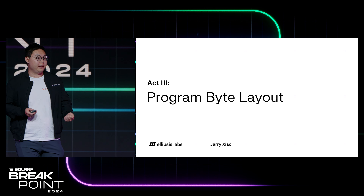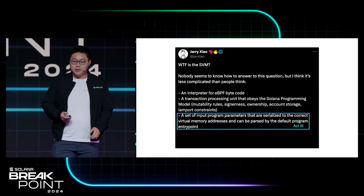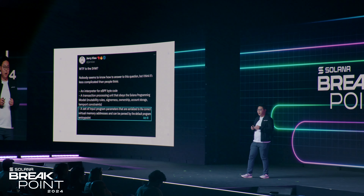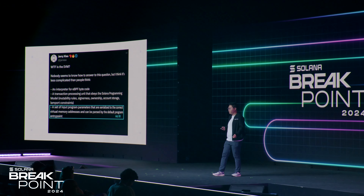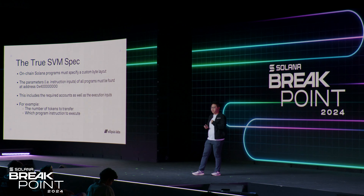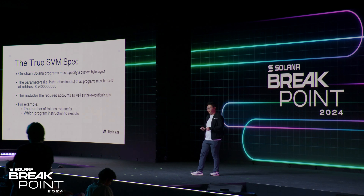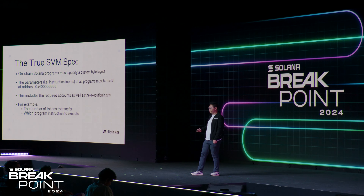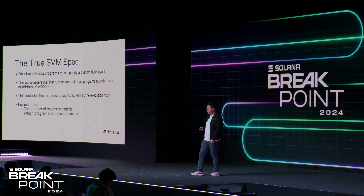Act 3 is about the actual byte layout of the programs executed in the VM. Each program executed on Solana is given an input set of parameters that are serialized to the virtual address space accessible by the interpreter. In my opinion, this is the only true spec found in the SVM — the only thing enforced by the existing execution model. On-chain programs must specify this custom byte layout because the execution environment is passing them those bytes in a particular format. The parameters of all programs are found at a hard-coded address in the virtual address space, and what is found there contains all the inputs necessary for that program to run.